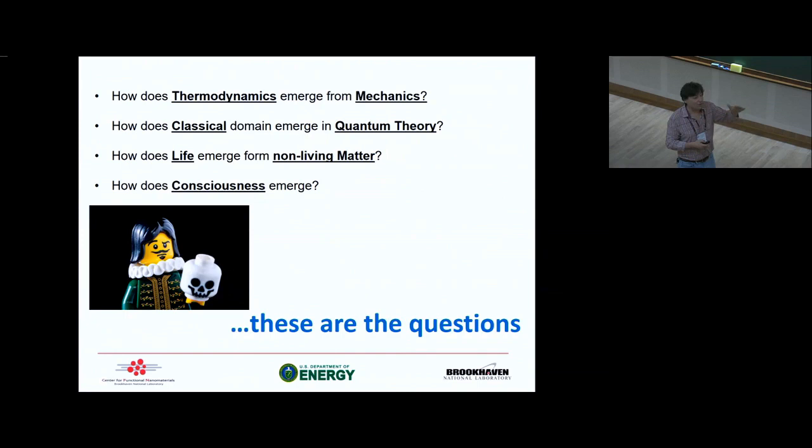So first question, how does thermodynamics emerge from mechanics? Then how classical domain emerge in quantum theory? Then how life emerges from non-living matter? And how does consciousness emerge? Right? So all these are probably quite fundamental questions. Now, my definition of satisfactory answer is very simple. It's the answer that I will be satisfied with. And in that sense, the first question, I believe, is off the table. I don't have problem with it. The problem, it's mostly people who write statistical mechanical books have problem with it. So as we all know from Dan's talk, probably that's the wrong place to search for wisdom when you're looking for some truly non-trivial question. But the problem is solved. So that's okay.